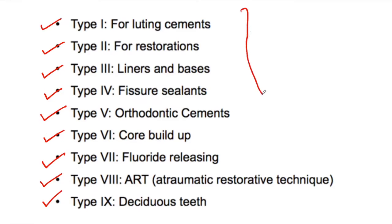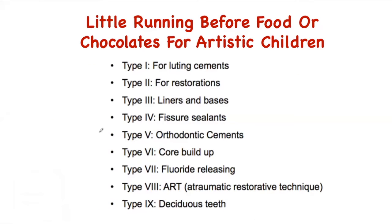Now it's very confusing for students to remember these 9 types according to their use. To remember these 9 types you just need to remember this line: 'Little Running Before Food Or Chocolates For Artistic Children.' By remembering this simple line you'll be able to recall all these 9 types.